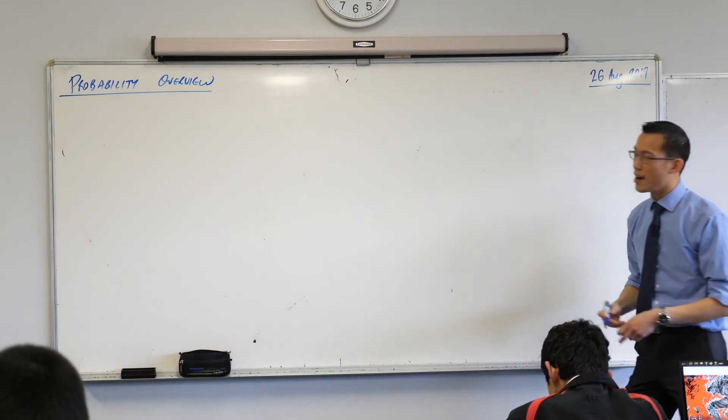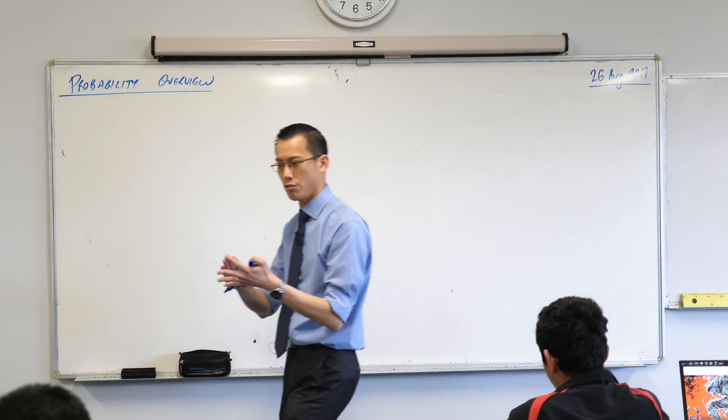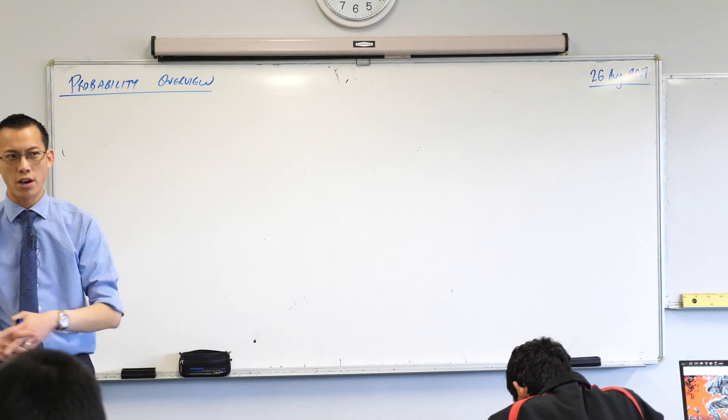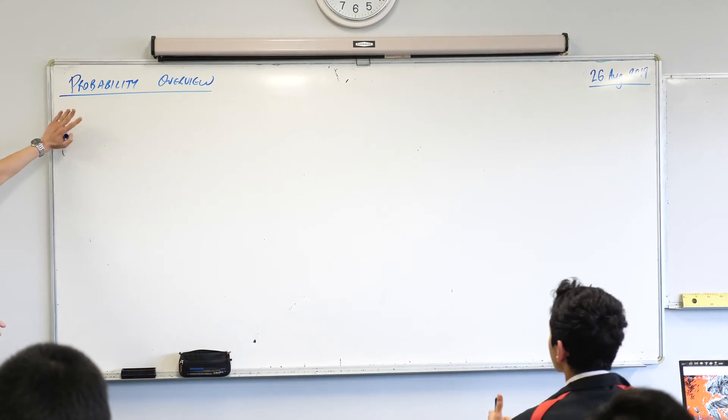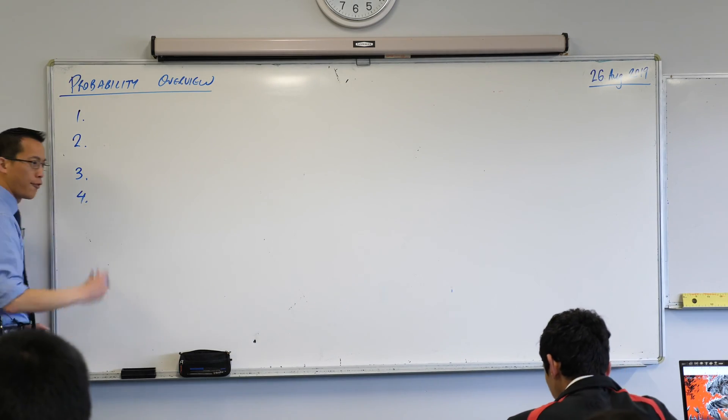I want us to very rapidly, and I only want to spend about five minutes on this, very rapidly rehearse what are the, and there are four, what are the two big ideas and two different visual tools that we've learnt over the last little bit that help us understand probability. So I'm going to number them one, two, three and four.